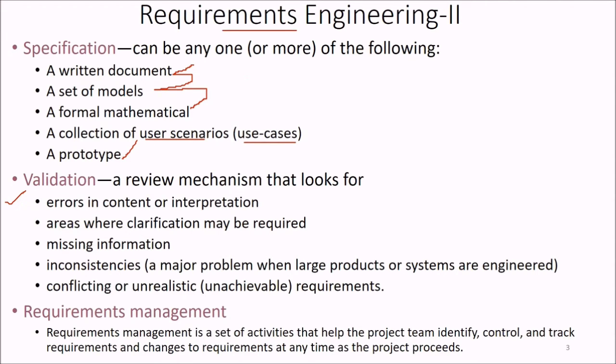What exactly should we review in our requirements engineering? Errors in content or interpretation, areas where clarification may be required, missing information, and inconsistency - which is a major problem when large products or systems are engineered. Also conflicting or unrealistic, unachievable requirements.